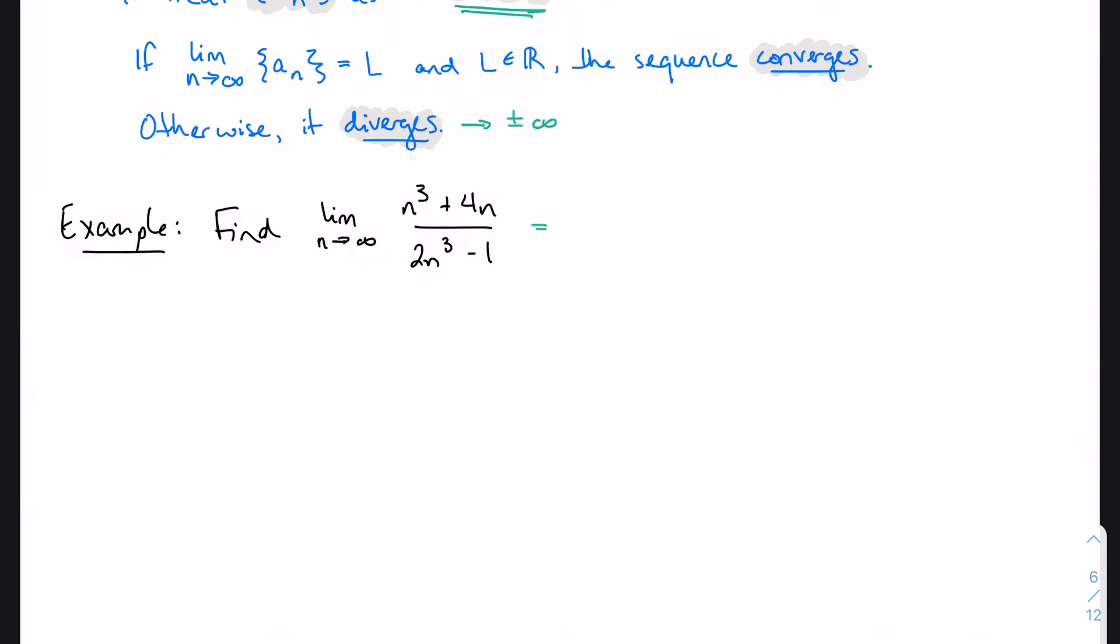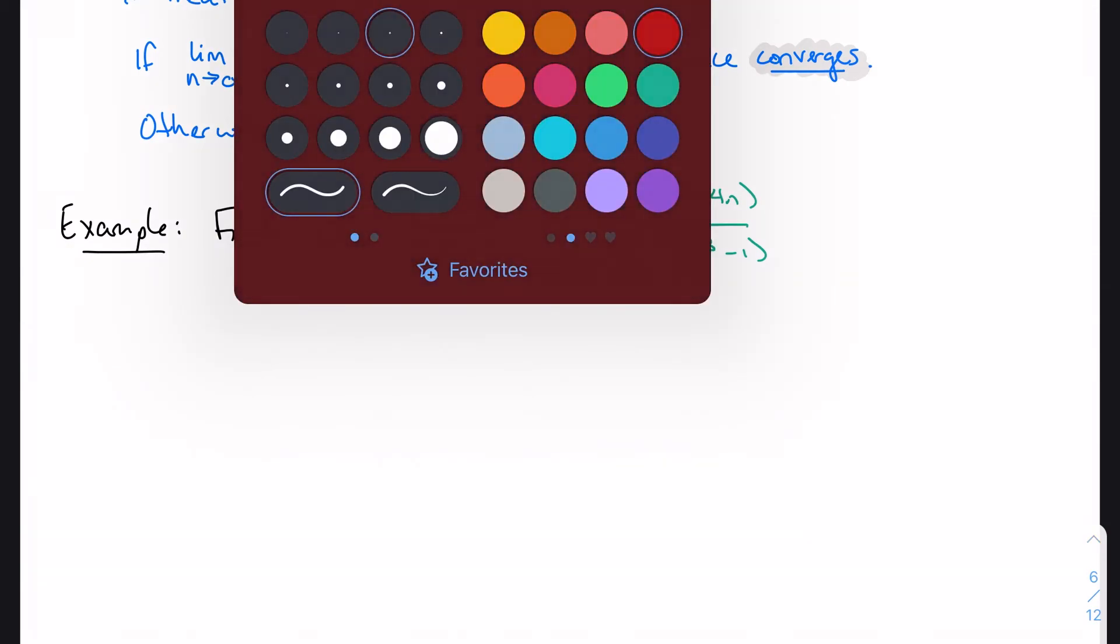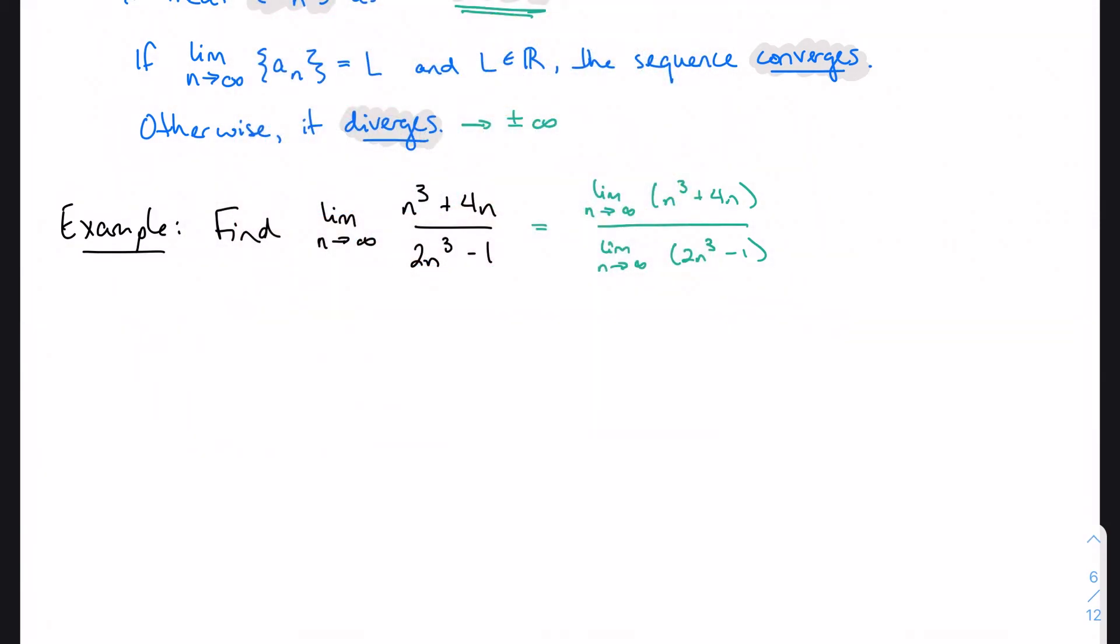So my first step is going to be to consider the limit of each part of the function separately. And again, we notice that we're going to end up with an infinity over infinity case. So let's correct that by dividing by the variable with highest degree.